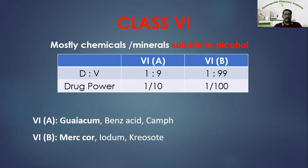Class six — mostly chemicals or mineral sources, soluble in alcohol. Class 6A: drug-vehicle ratio 1:9, drug power 1/10. Fundamental rule: Guaiacum. Other drugs: benzoic acid and camphor. Class 6B: drug-vehicle ratio 1:99, drug power 1/100. Fundamental rule: Mercurius corrosivus (Merc-cor). Other drugs: Iodium and Cryosote.